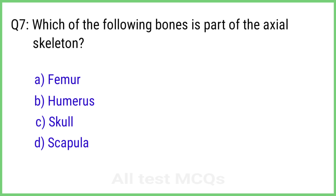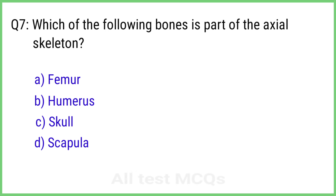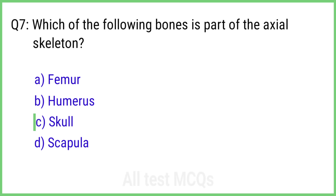Question 7. Which of the following bones is a part of the axial skeleton? The right answer is option C: Skull.